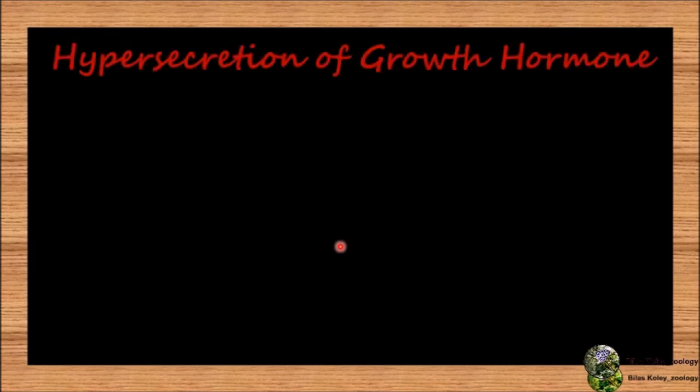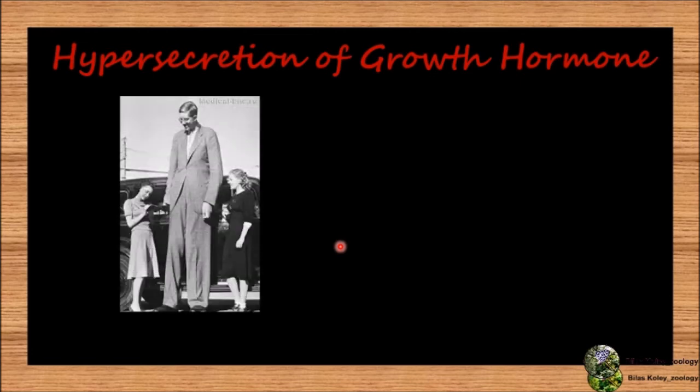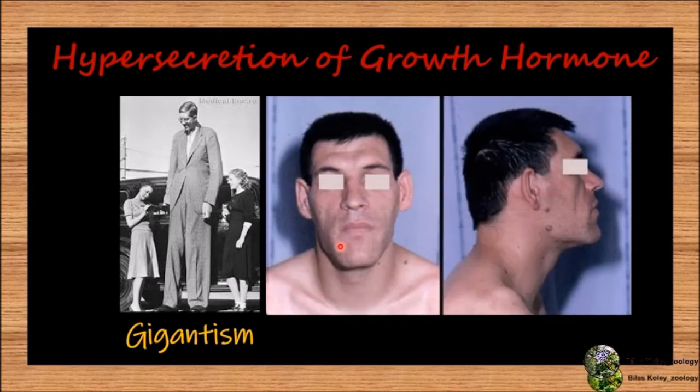Hypersecretion of growth hormone: Gigantism is characterized by abnormal increased height up to 7 to 8 feet along with enlarged bones, due to over-secretion of STH from childhood. Acromegaly is characterized by abnormal elongation of limbs and lower jaw, giving a gorilla-like appearance with protruding bone ridges over the eyes. It occurs due to over-secretion of STH in adults.